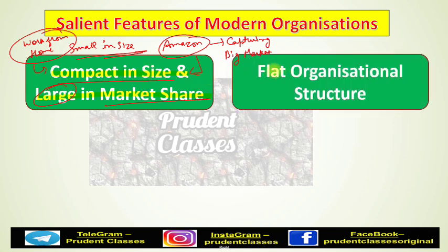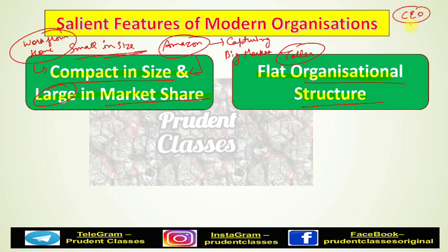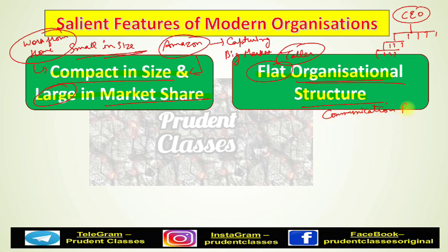The next salient feature is flat organizational structure. Every organization has some kind of structure — who reports to whom, who is responsible for what. For example, the CEO is at the top, under whom are managers, under them are employees and subordinates. Old organizations used to follow tall organization structures. But modern organizations follow a flat organizational structure so that communication is faster, decision-making is faster, and dispute resolution is also faster.